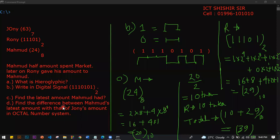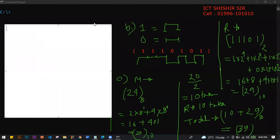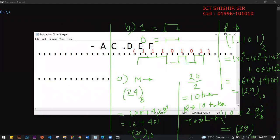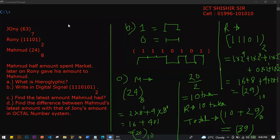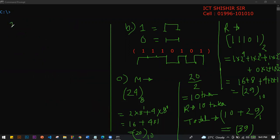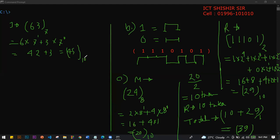Find the difference between Mahmoud's latest amount with that of Johnny's amount in the octal number system. 39 base 10 — what do you want to do with octal number? Johnny's amount is 63 base 7. So: 6 into 7 to the power 1, plus 3 into 7 to the power 0 equals 42 plus 3 equals 45 base 10.